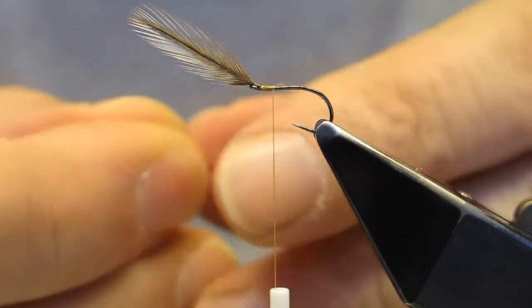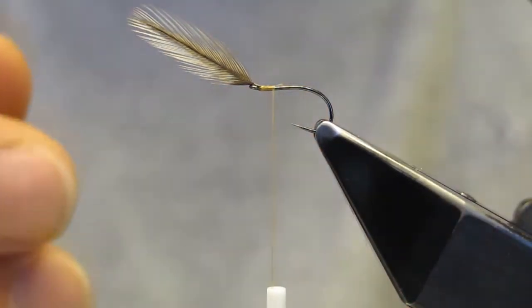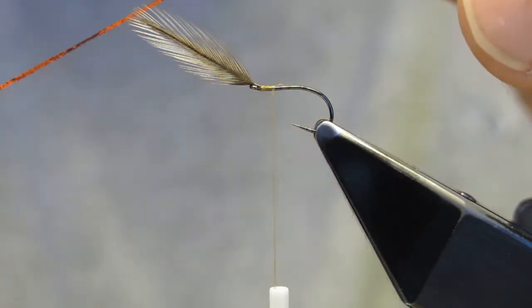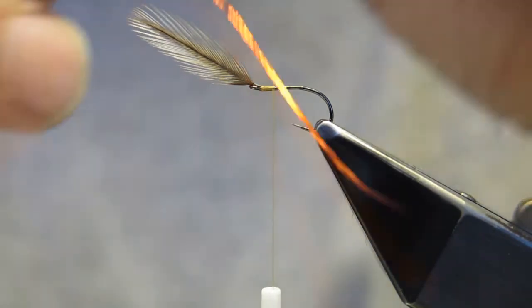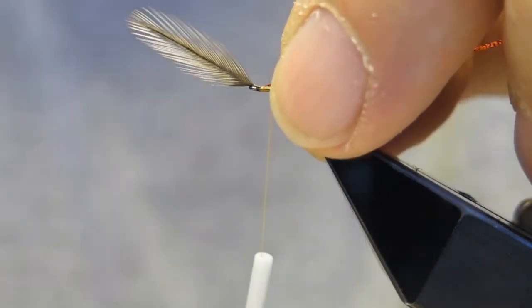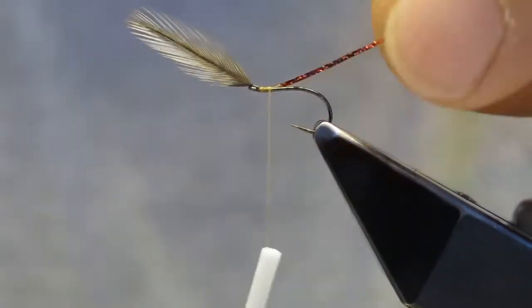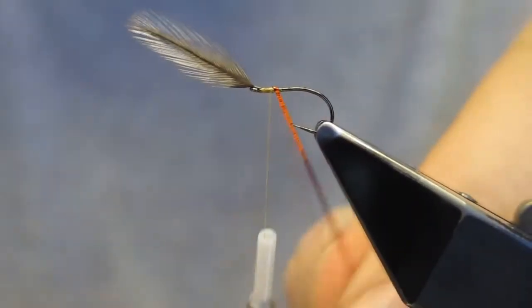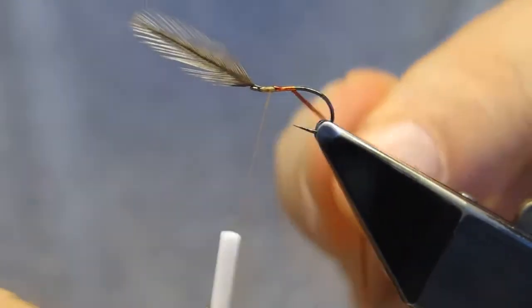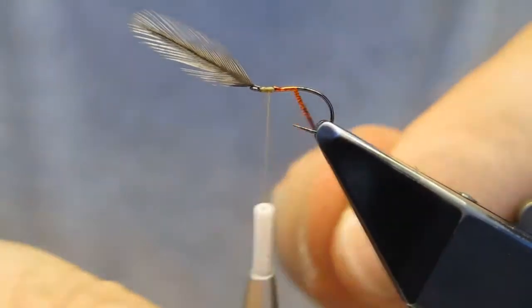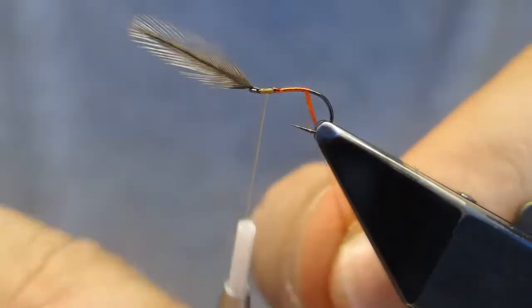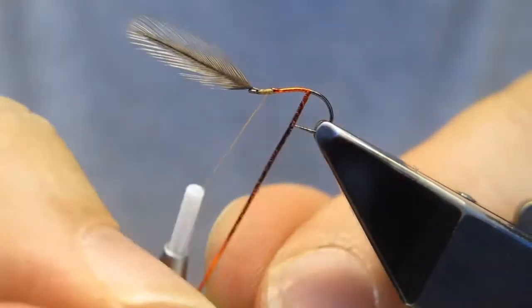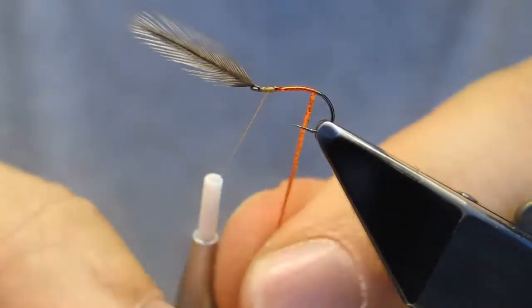The abdomen and ribbing material is a strand of flash material. It gets wrapped in touching turns to the bend like so.